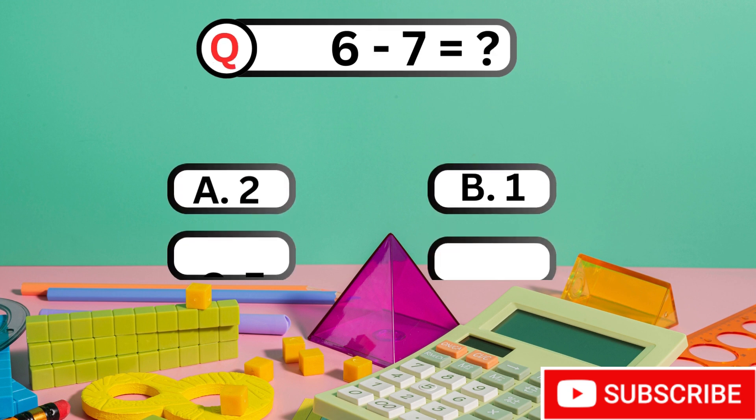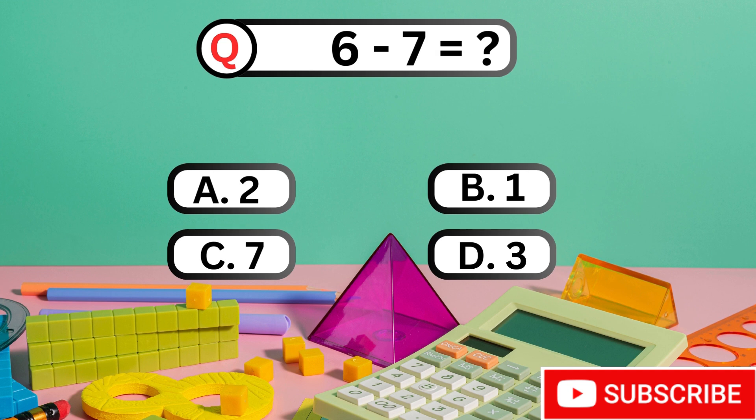6 minus 7 equals to what? Options are A, B, C, D.